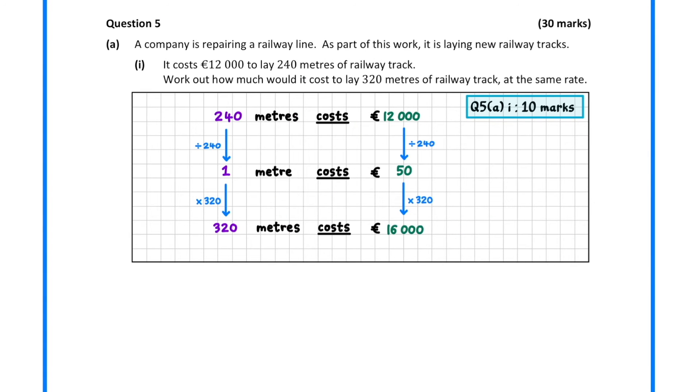In question 5a part 1, we are told that it costs €12,000 to lay 240 metres of railway track. We must find the cost of laying 320 metres of track. Here it will help to find the cost of 1 metre of track as an intermediate step. We know that 240 metres costs 12,000. If we divide both sides by 240, we find that 1 metre costs 50. From here, we can multiply both sides by 320 to find the cost of 320 metres.